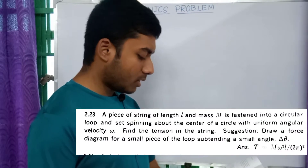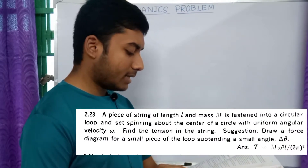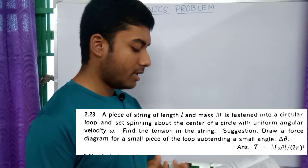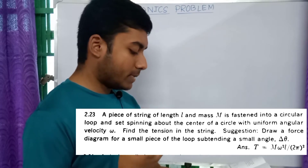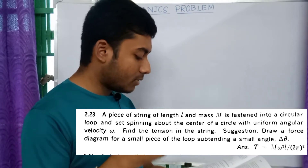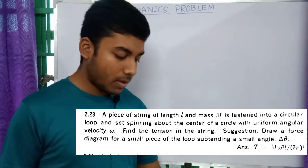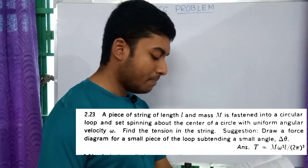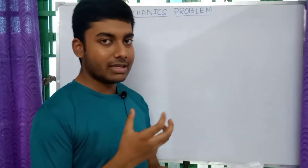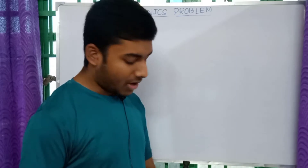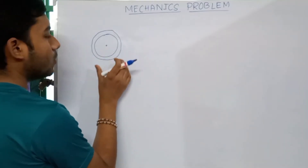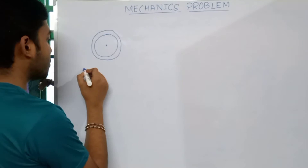In this problem, a piece of string of length l and mass m is fastened into a circular loop and is rotating. We have to find the tension in the string.